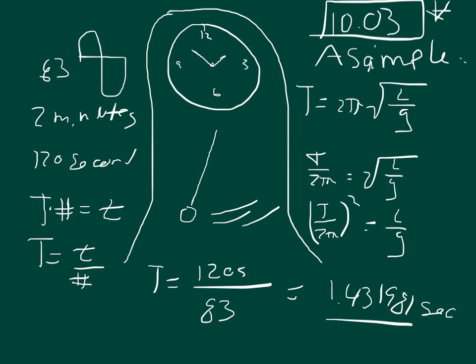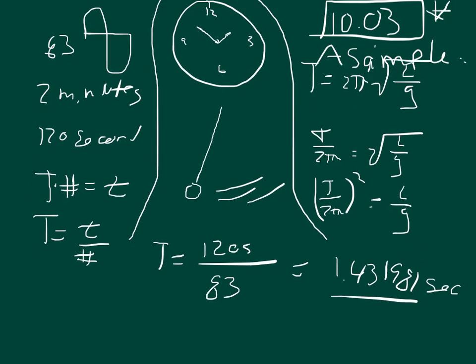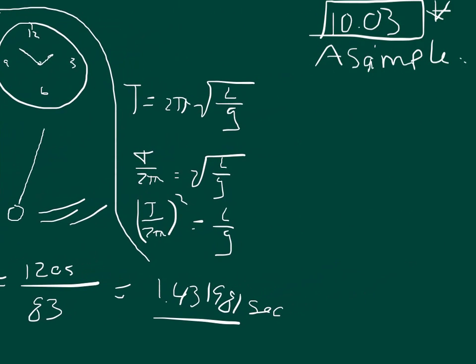And then we can just simply switch around this term with G. And we will get that, let me move this around. Okay, so we'll move all of that over. And then, so we'll get that G is equal to L over T over 2π quantity squared.